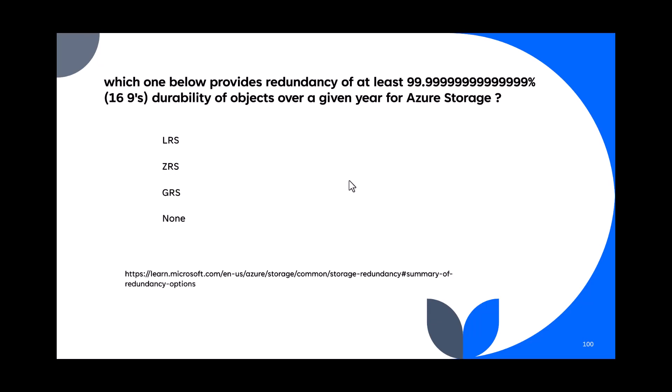Congratulations — we have reached question 100. Which storage redundancy provides at least 99.999999999999% (16 nines) durability of objects per year in Azure storage? LRS and ZRS do not reach 16 nines. The answer is GRS — geo-redundant storage. This concludes part two of the AZ-900 questions and answers. Thank you for watching — please share, subscribe, and like. We'll see you in part three.